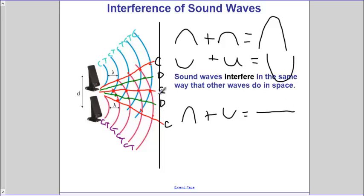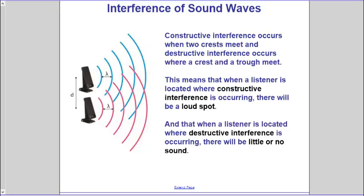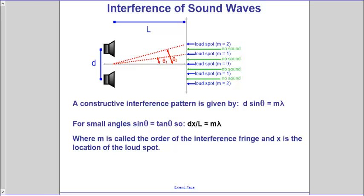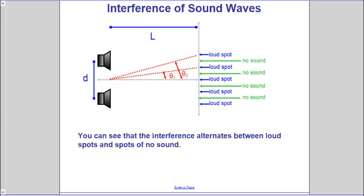So we're going to predict the location of these constructive and destructive locations along a line — we'll call that a screen, because this could be light. So what do the locations of the loud spots and the soft spots depend on, and how can we predict them? It's a very complex situation that can be explained in an easy way. I'm going to duplicate this slide so we can use it again.